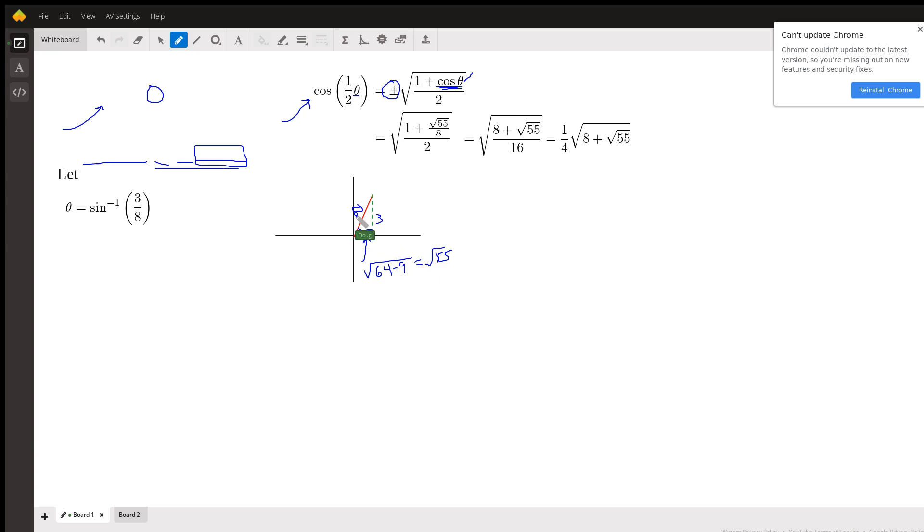So the cosine of that angle, where this is theta, is the square root of 55 over 8, which is what I put right here. Now you could leave the answer like that. And by the way, since this angle theta is in the first quadrant, half that angle is still going to be in the first quadrant. But if you want to make this look a little better...